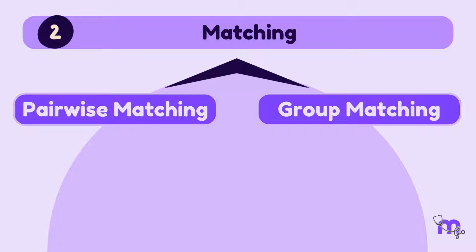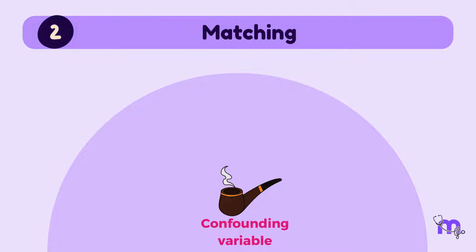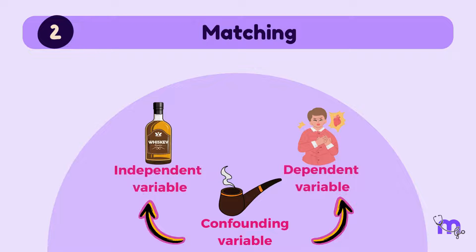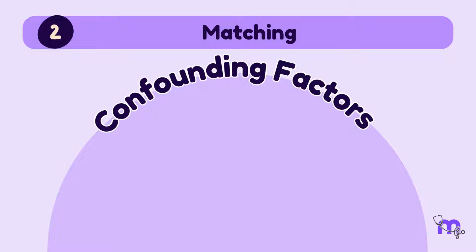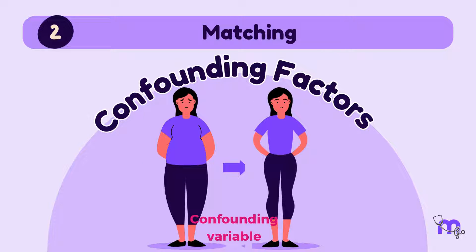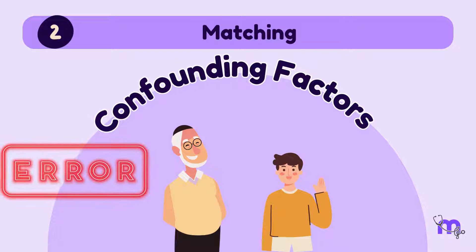A confounding factor may mask an actual association or falsely demonstrate an apparent association between the study variables, where no real association between them exists. For example, age can be a confounding factor for individuals who undergo a fat loss program. Younger individuals tend to lose weight more quickly than older individuals, and this can lead to errors in the study.